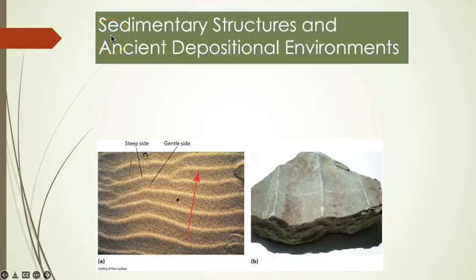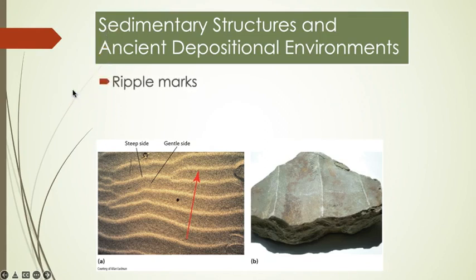Sedimentary rocks can contain internal structures that formed as the sediment was deposited, or when sediment was disturbed after being deposited but before becoming lithified. These structures can provide valuable information about the depositional environment where the rock originated. The most fundamental sedimentary structures are lamination and stratification. Some others include ripple marks that form perpendicular to the direction of wind or water flow and can be asymmetrical or symmetrical.